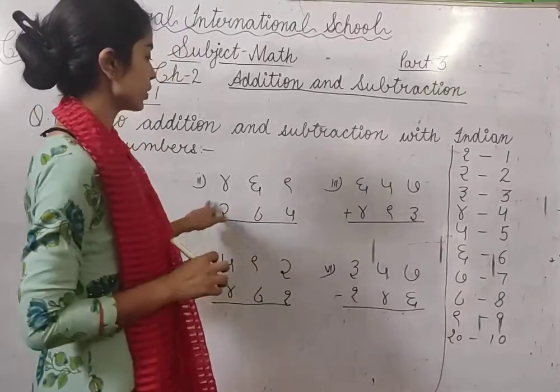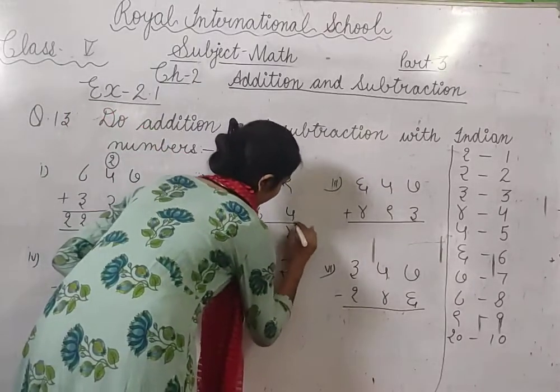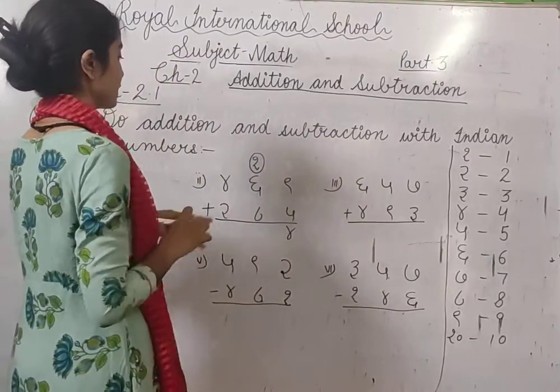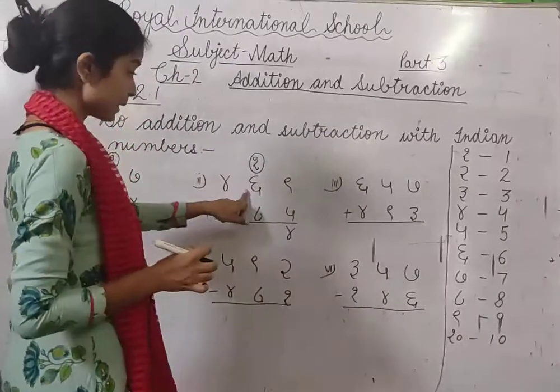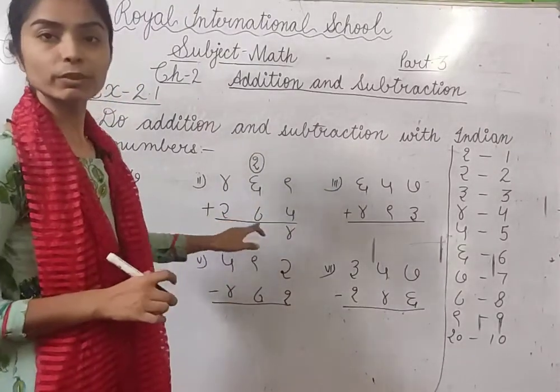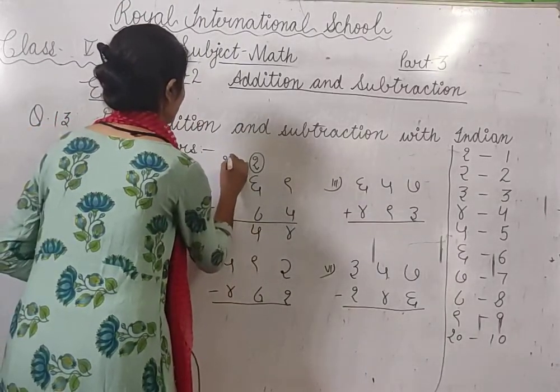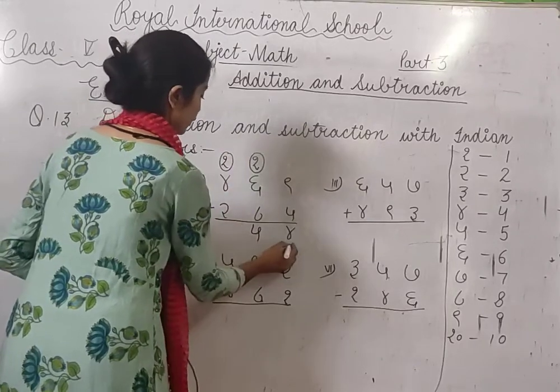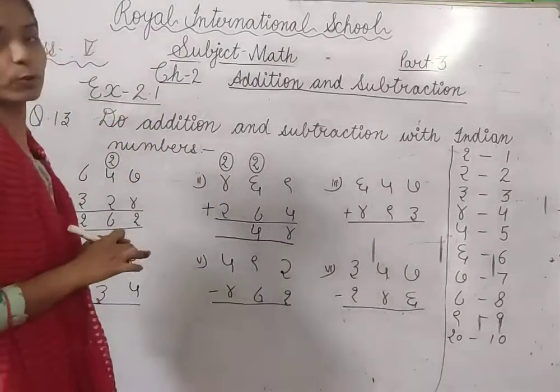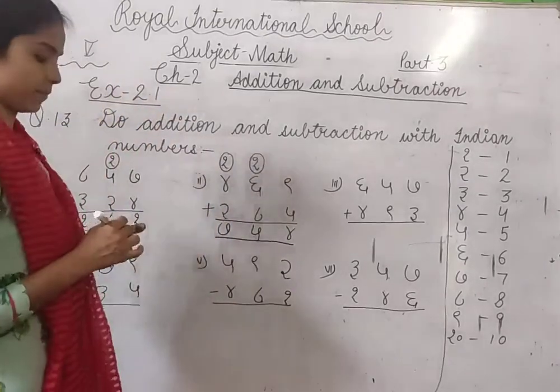Then next addition again, addition hai. 9 plus 5 is 14. 1 carry, 4 likhenge. Then 1 plus 6, it is 6. 1 plus 6 is 7, 7 plus 8 is 15. 1 and 1 carry. 4 likhenge, 5 here, and 1 carry, 4 likhenge. Then 4 plus 1 is 5, 5 plus 2 is 7.